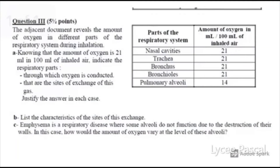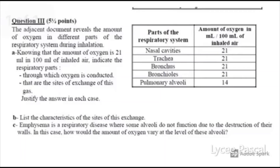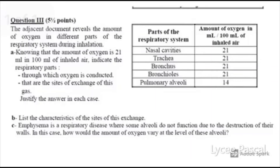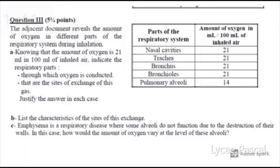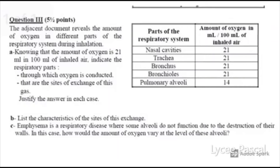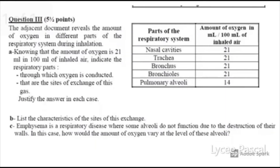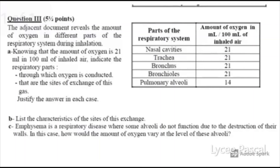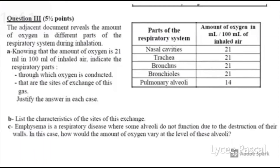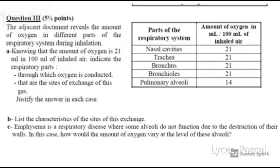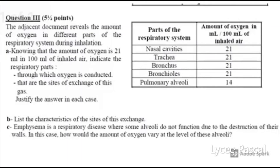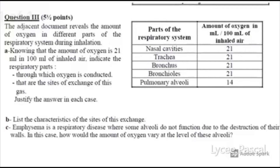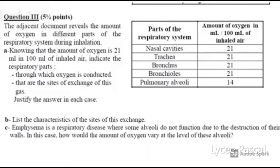Now let's solve a question. A document shows the amount of oxygen in different parts of the respiratory system during inhalation. Knowing that the amount of oxygen is 21 ml per 100 ml of inhaled air, indicate the respiratory parts through which oxygen is conducted and the sites of exchange, justifying each answer. From the document, the amount of oxygen is the same — 21 ml — in the nasal cavities, trachea, bronchus, and bronchioles, so these are the conduction parts. The site of exchange is the pulmonary alveoli, because the amount of oxygen decreased from 21 to 14 ml.